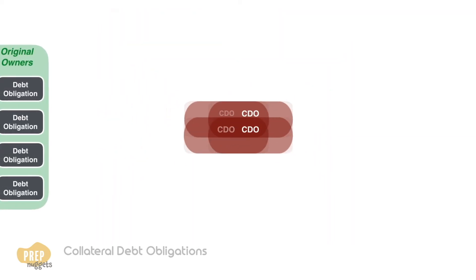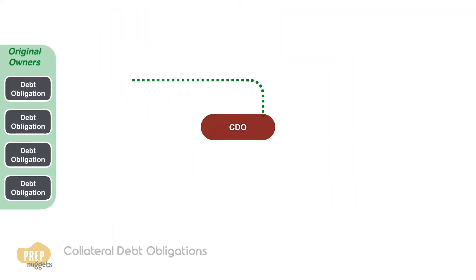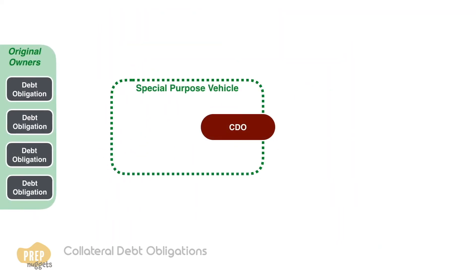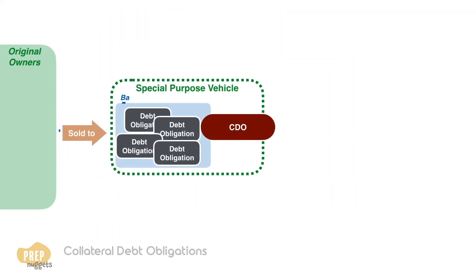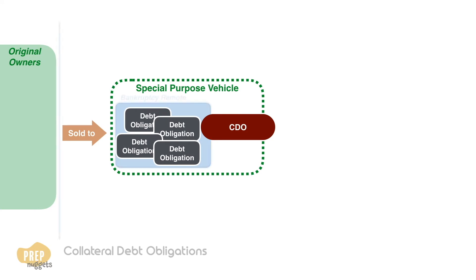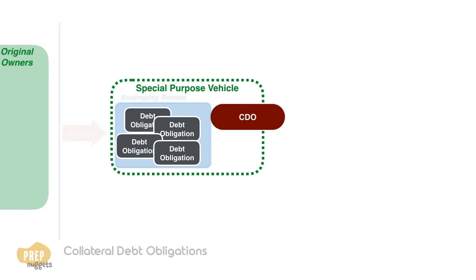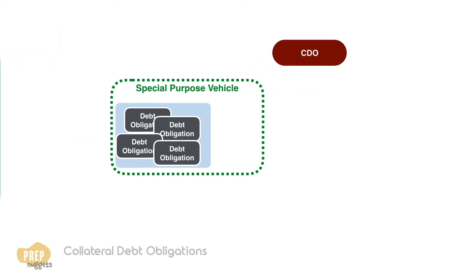To create a CDO, a special purpose vehicle should be created such that the assets are bankruptcy remote from their original owners. The funds to purchase the collateral assets for a CDO are obtained from the issuance of debt obligations.